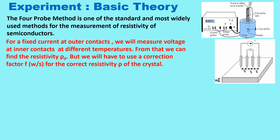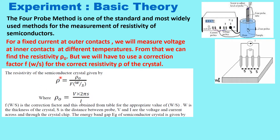At different temperatures we can find out the resistivity rho naught. Because the sample dimensions have some role in the resistivity, the thickness W and the distance between the contacts — the W by S ratio — will give us a correction factor F, which we will use for the final calculation of resistivity. The resistivity of the crystal is given by rho equal to rho0 divided by the correction factor F, where rho0 depends on V by I into 2 pi S, where S is the distance between the contacts, and V and I are measured from the instrument.